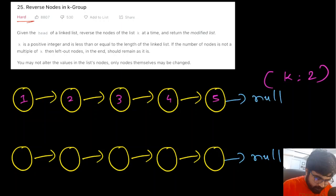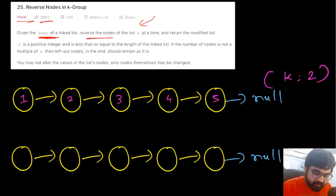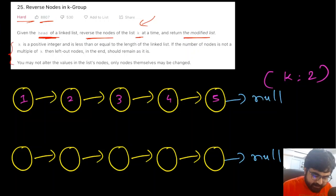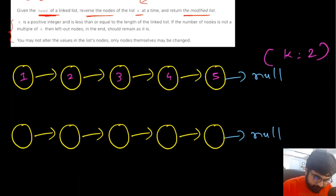This is a LeetCode hard problem and also a very well-liked problem on LeetCode. Basically we are given the head of a linked list and we are also given another integer value called K. Based on this given head of the linked list, we need to reverse the nodes inside the linked list K at a time and return the modified list. If the number of nodes is less than K, we do not need to reverse them.